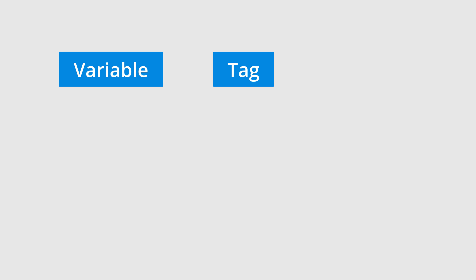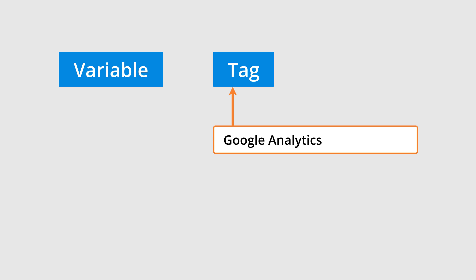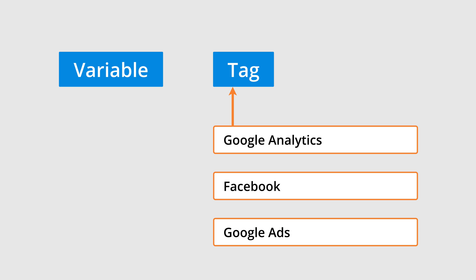We'll also be using a tag. A tag lets us send information to the different platforms we are using. For example, we can create a Google Analytics tag to send details about the button someone has clicked to our Google Analytics reports. Or we can use a tag to send details to Facebook or Google Ads.